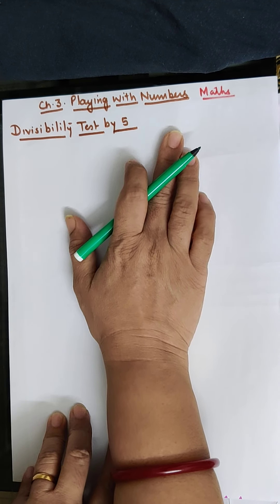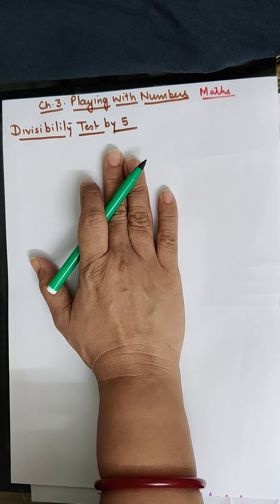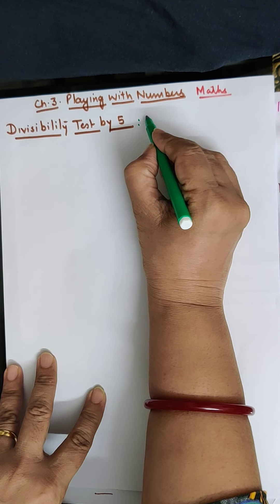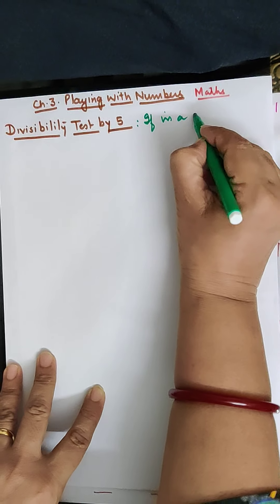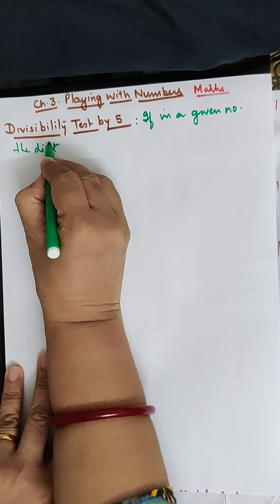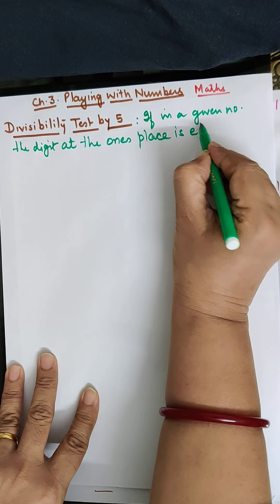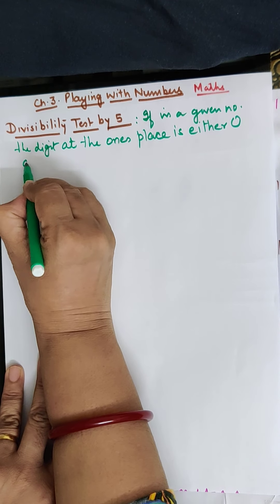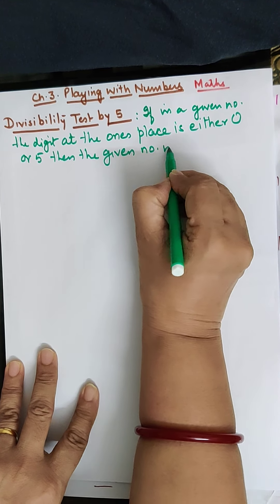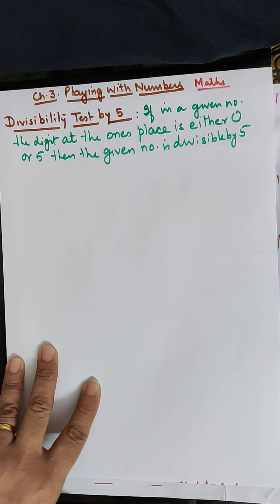Children, today in the chapter 'Playing with Numbers' we shall discuss divisibility by 5, divisibility by 4, and divisibility by 8, and solve questions based on it. Let us begin first with divisibility by 5. If in a given number the digit at the ones place is either 0 or 5, then the given number is divisible by 5.